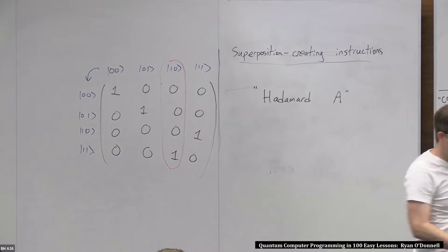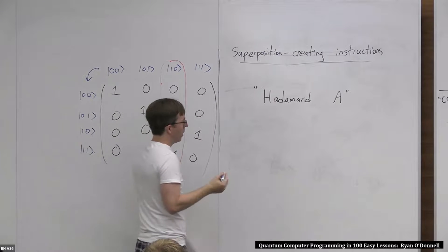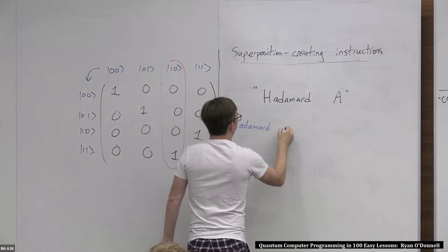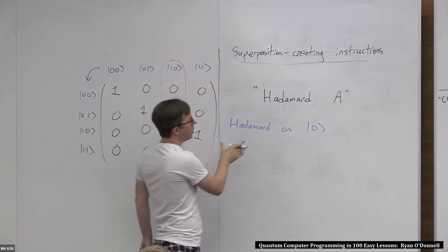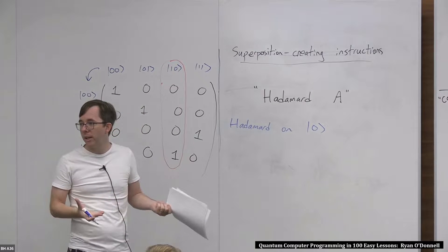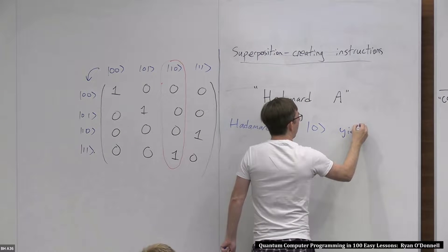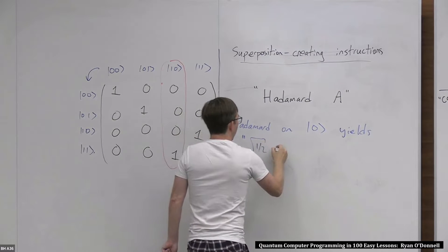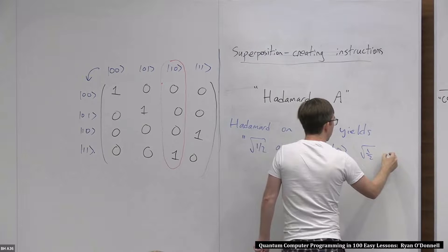So let me put up the definition of the Hadamard instruction — you just have to memorize this. It's the one where you really need to memorize it. If you do Hadamard on basic state |0⟩, I'm only going to define what happens when the qubit is in basic state |0⟩ or basic state |1⟩. Later I'll tell you how to infer what it does to a qubit in any state. Hadamard on |0⟩ yields the superposition state: square root of 1/2 amplitude on |0⟩ and square root of 1/2 amplitude on |1⟩.